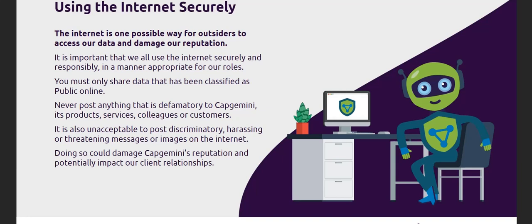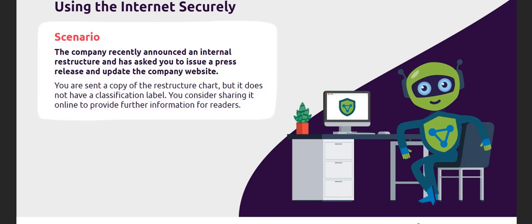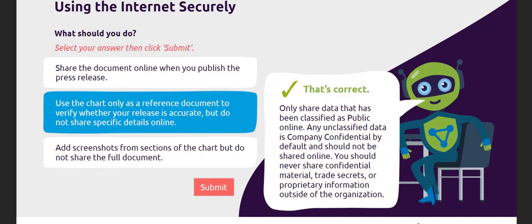Do not post anything defamatory, discriminatory, harassing or threatening. This is a scenario that you could find yourself in at work. Read through the scenario and think about what you should do in this situation, pick your answer and then select submit. Only share data online if it has been classified as public. If the data has not been given a classification label, it should be treated as company confidential by default.